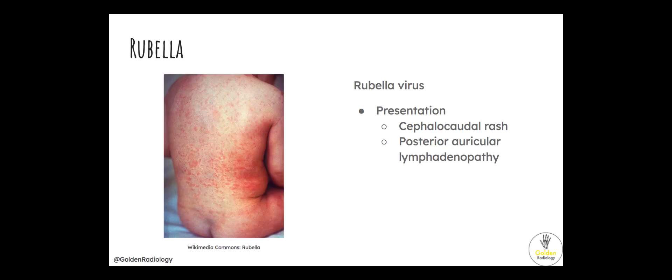Rubella is caused by the rubella virus. The presentation is similar to measles in that you also get a cephalocaudal rash. A distinguishing feature is posterior auricular lymphadenopathy — enlargement of the lymph nodes behind the ear.